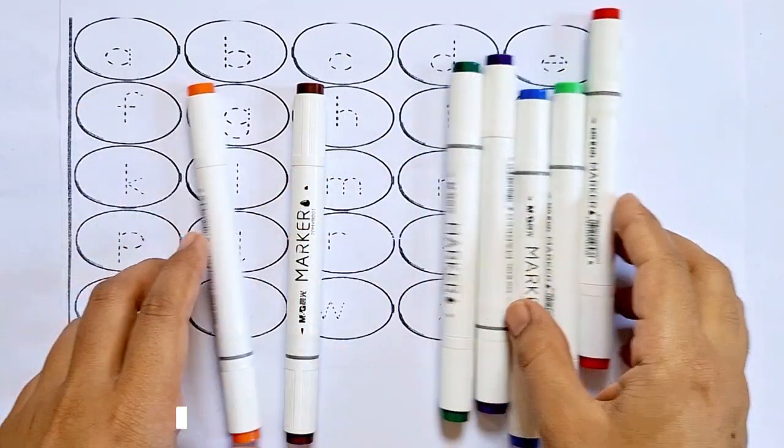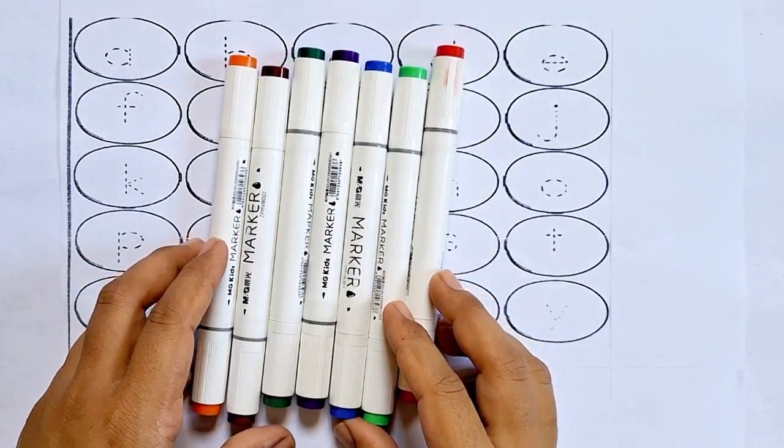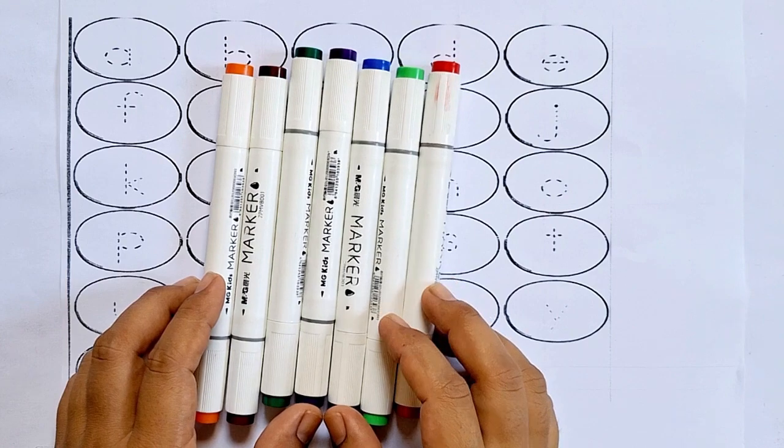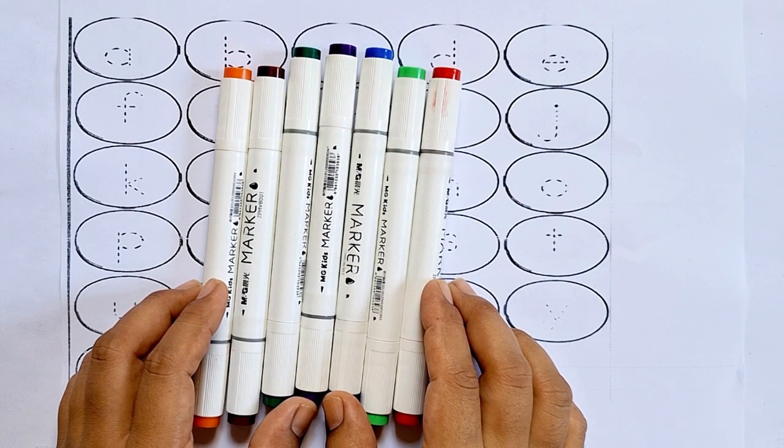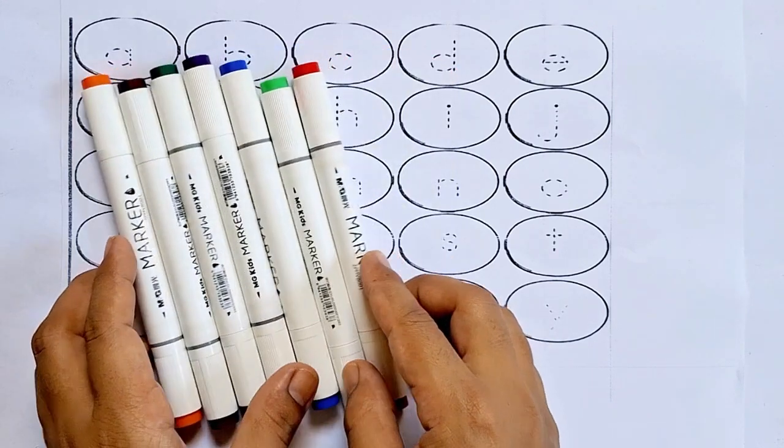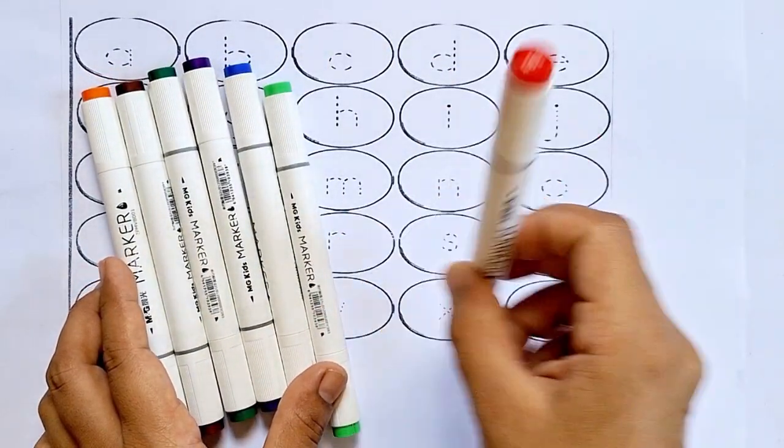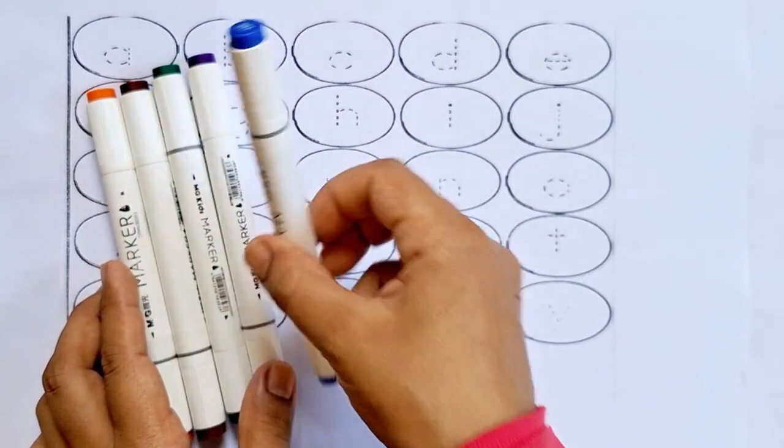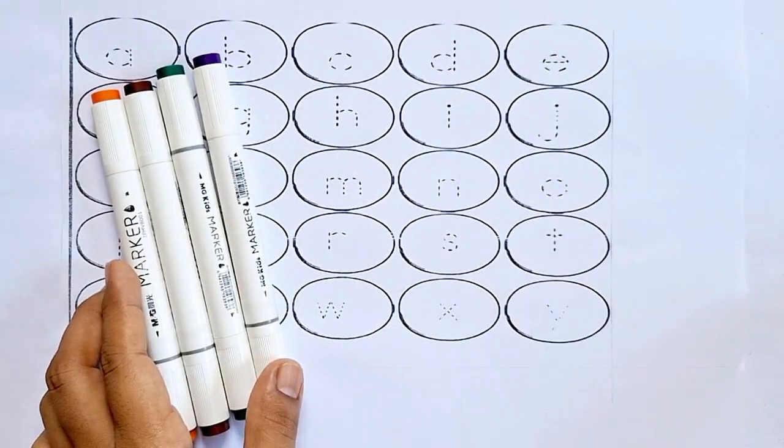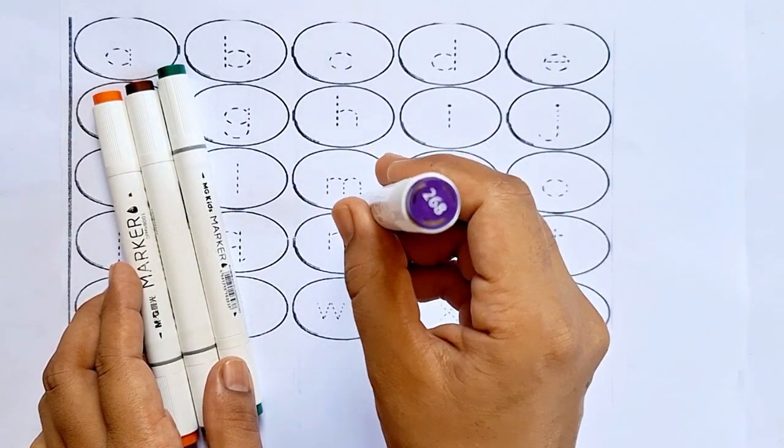Hello kids, how are you all? Today I'm going to teach you the small alphabets. Are you ready? Let's get started. But before we begin, let's learn some color names: red color, light green color, dark blue color, purple color.